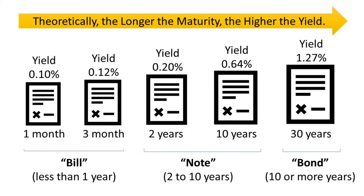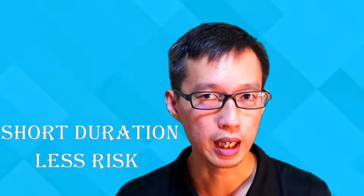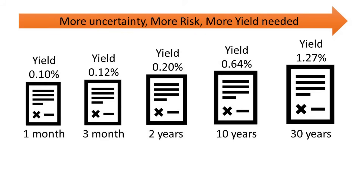Bonds have many different maturities — they can be as short as 1 month to as long as 30 years. Typically the yield on bonds is different for the different maturities: the shorter the maturity, the less yield there should be. A 1-month bond would have less yield than a 30-year bond. If you lend the government money and they pay you back in a month, there is less risk. But over 30 years, a lot can happen — interest rates might change, there could be a war. Because of the uncertainty, bond holders require more yield for longer maturities.